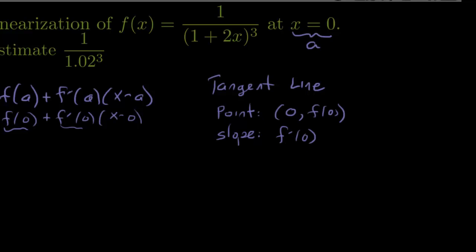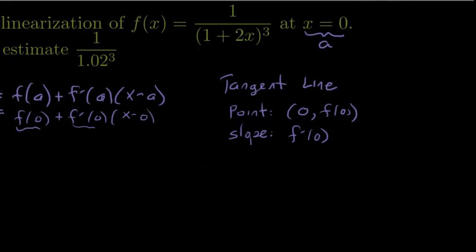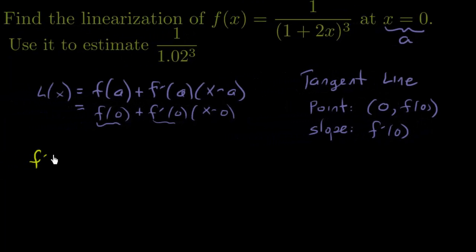So let's go ahead and figure out what f prime is, because I need to do that to find f prime of 0. So let's first actually write f(x) in a form that we can take the derivative of. I'm going to rewrite that function as (1+2x) to the negative 3. And now I'm ready to find the derivative. So that's f prime of x.